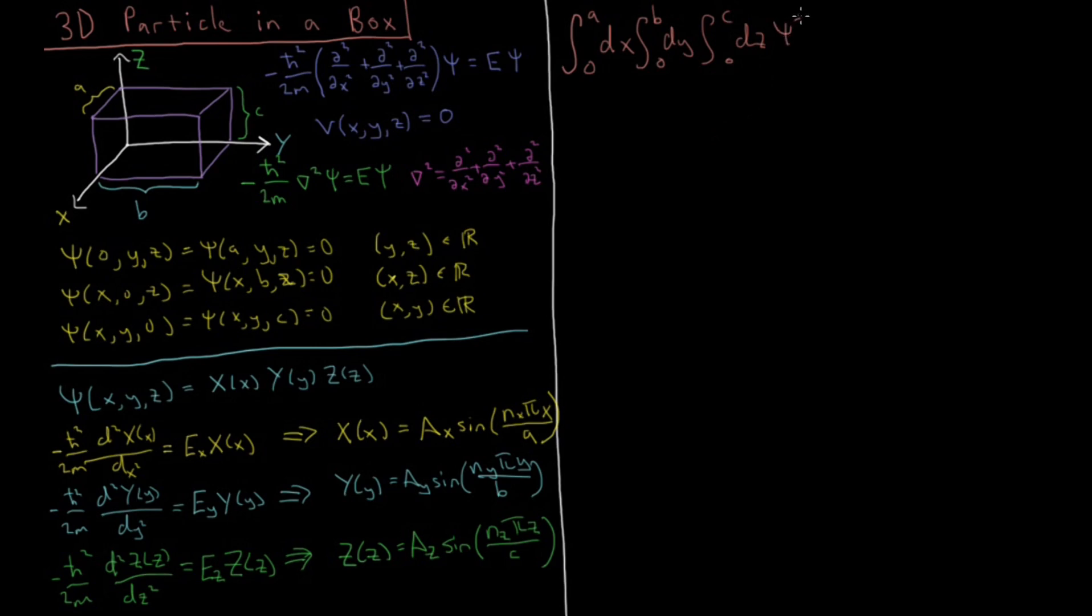We know that psi star of x, y, z, because psi is, the wave function is a three-dimensional function now, depends on three variables, that this whole thing, it has to equal one. So if we solve this in the same manner that we solved it for the one-dimensional case, what we'll end up getting is that our normalization constant, the product of ax, ay, and az, equals the product of all the one-dimensional cases, eight over a times b times c. Okay, so that's probably not too much of a surprise either.